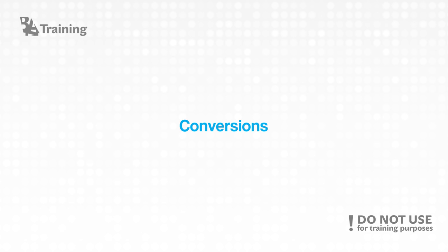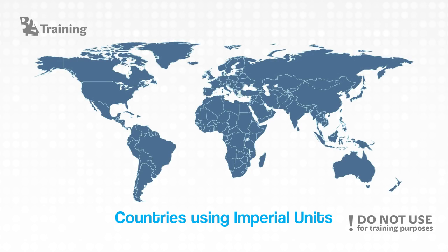Most of the countries in the world are using metric system. However, some of them are still using imperial units. Those few countries are Liberia, Myanmar, and of course the United States of America.